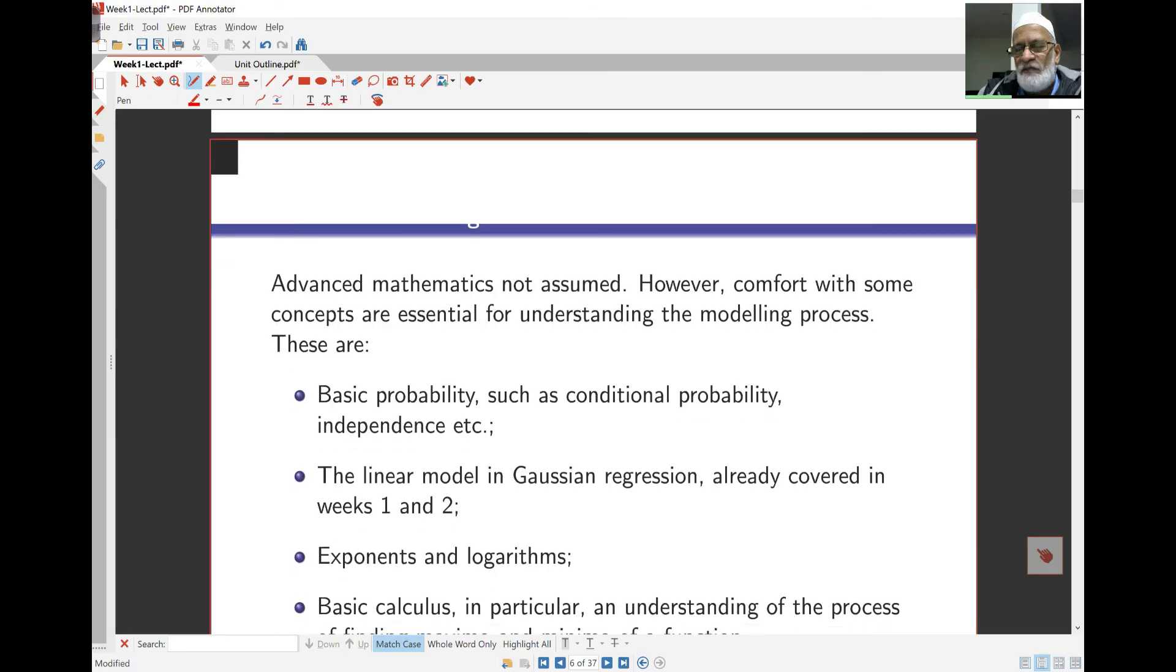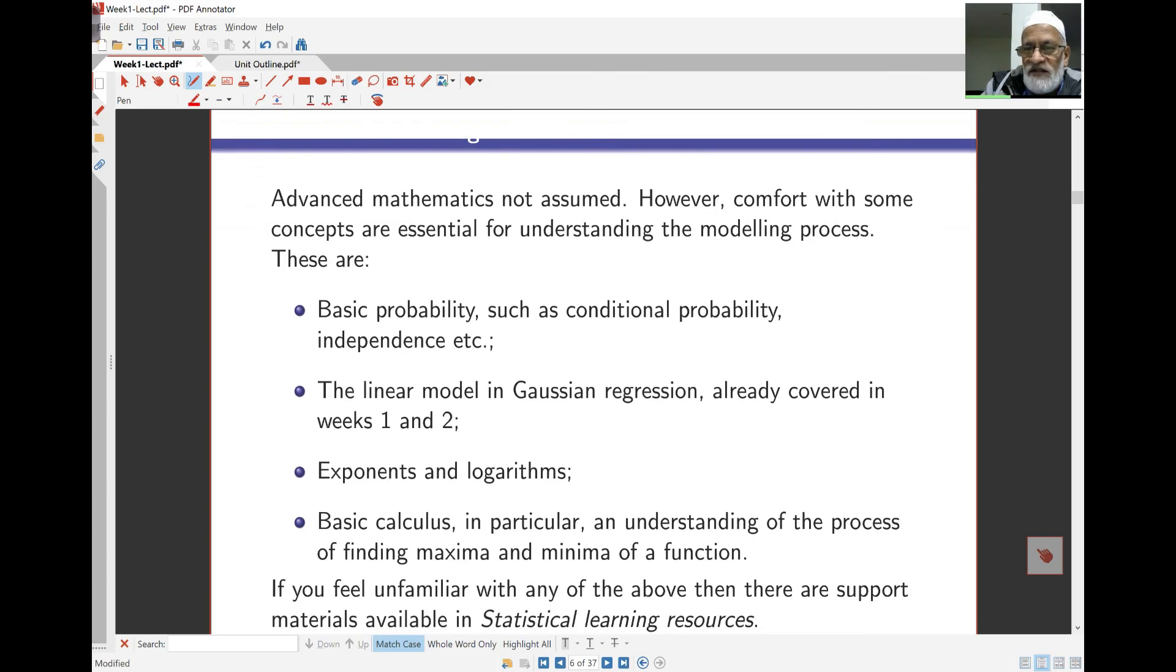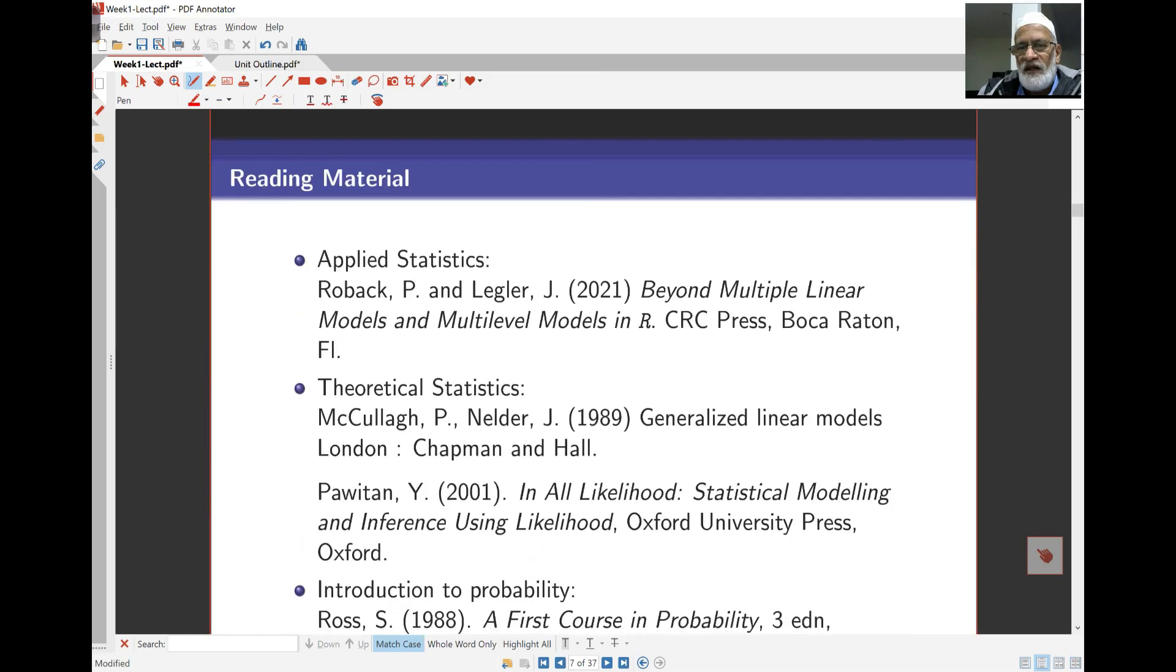Now it's nice if you have a bit more mathematics here but advanced math is not assumed. If you've done some probability theory earlier either in high school or through other units that will be really useful. If you've done some what we call Gaussian or linear regression that's also going to be useful otherwise we'll cover this in the first two weeks. If you've got some experience with exponential functions and logarithms that's also useful. And if you have some basic calculus the idea of finding maxima and minima that will be also useful. If you don't have any of these you can still pass and in fact you can still do well at this unit.